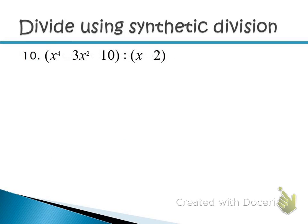Divide this next one using synthetic division — it qualifies as a linear binomial. Put the opposite of the constant, positive 2, in the box. Now write the coefficients of the dividend. There's an x⁴ term, but the x³ term is missing, so put a zero in its place. Bring down the x² coefficient, then the x to the first term is also missing, so put another zero. Then write the constant.